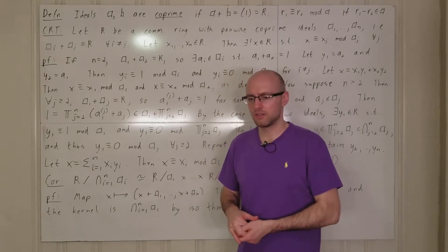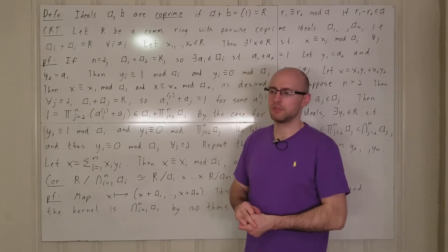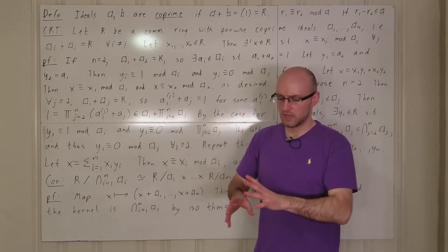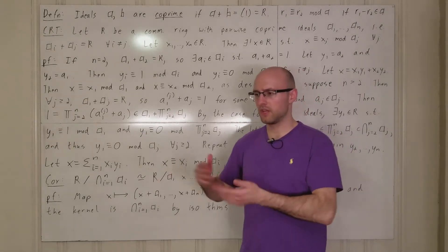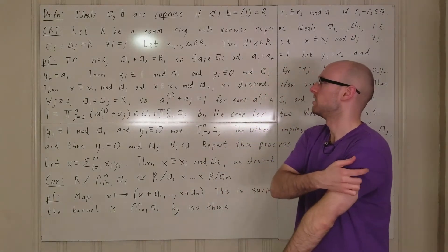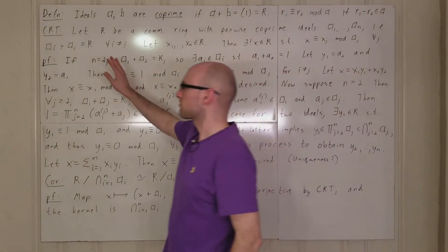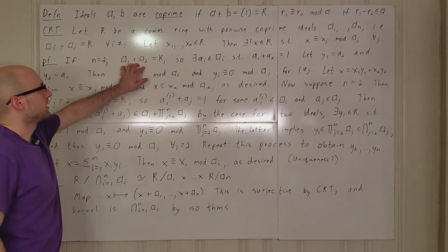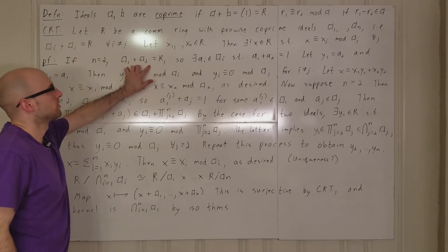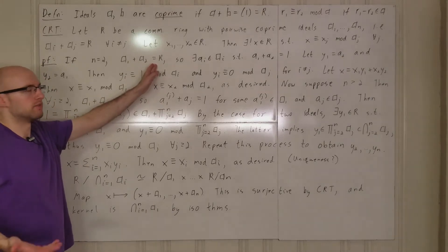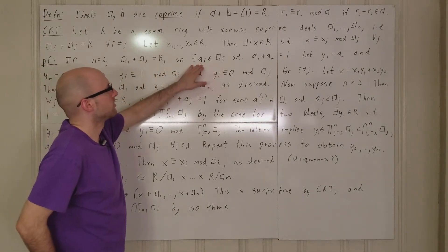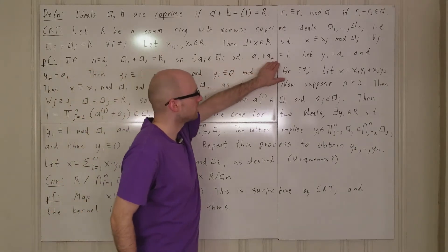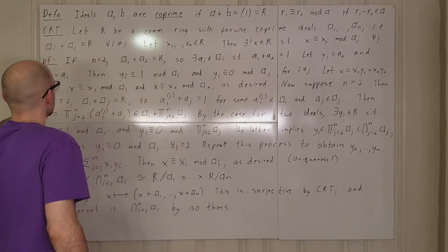Inductive arguments tend to be tedious because you have to deal with the n case and n plus one, and you have to be careful about off-by-one errors. Anyway, for the proof: when n equals 2 we have two ideals a1 and a2 whose sum is r, so in particular 1 is an element of r, and there must be an element a1 in a1 and a2 in a2 such that a1 plus a2 equals 1.